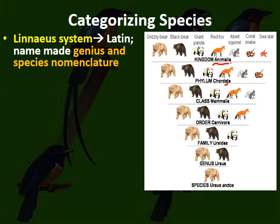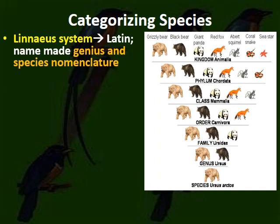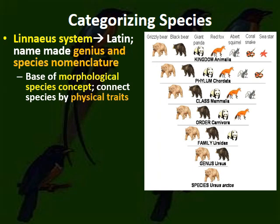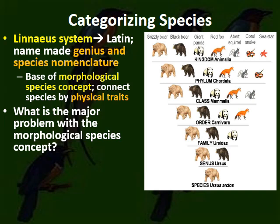Looking at different kingdoms: animalia, with backbone, mammal, carnivore, bear family — that's where the grizzly bear is grouped. A lot of classification can be based on morphology — the physical traits of the animal.